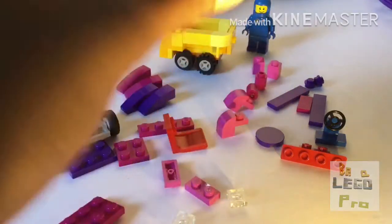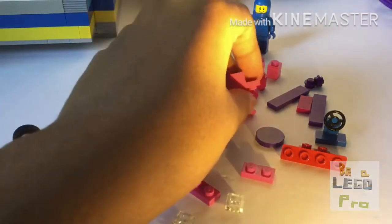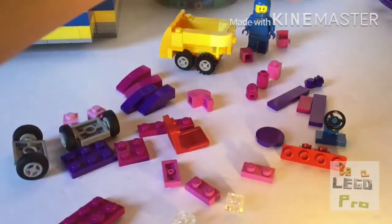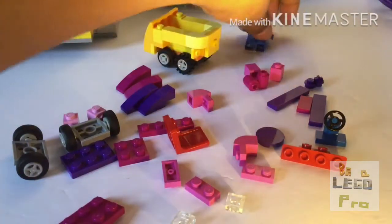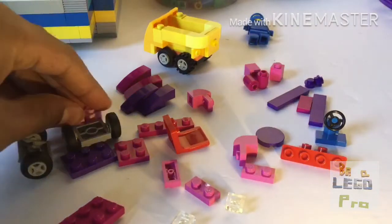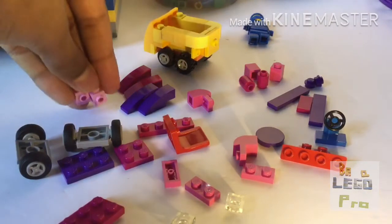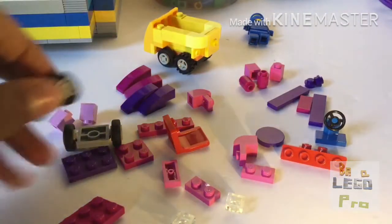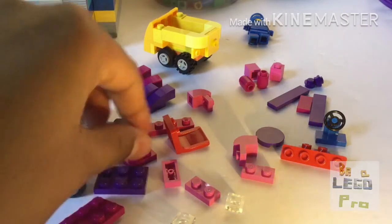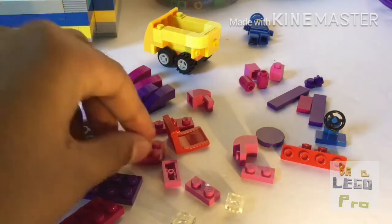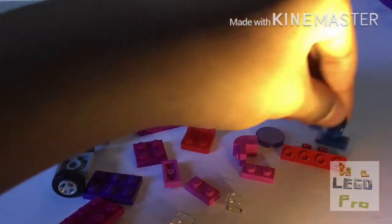You also need another one by two, these curved pieces, four of these one by twos with the stud on the side, some wheels, a two by three, a two by two, a seat, a steering wheel, and this one by four connected top. That's all the pieces.